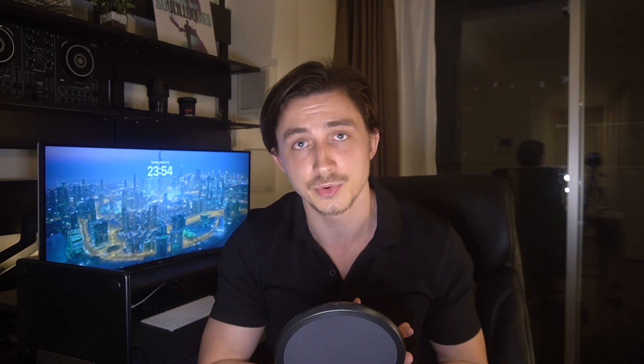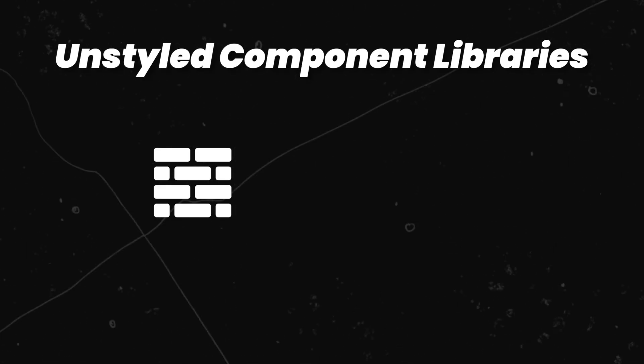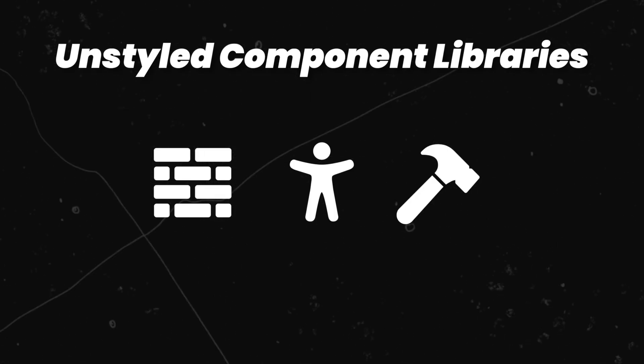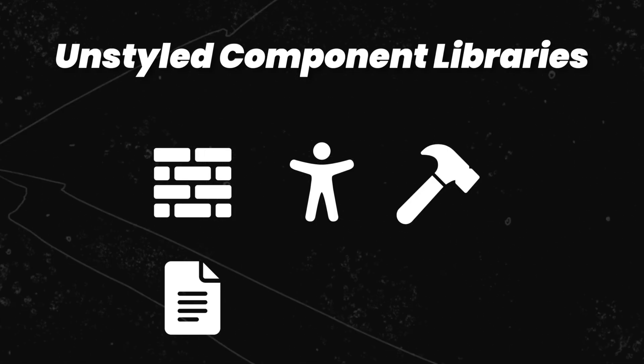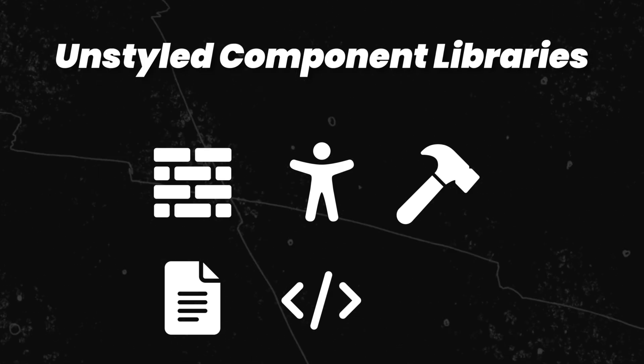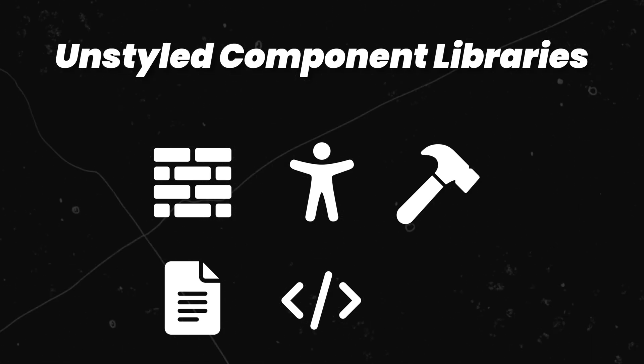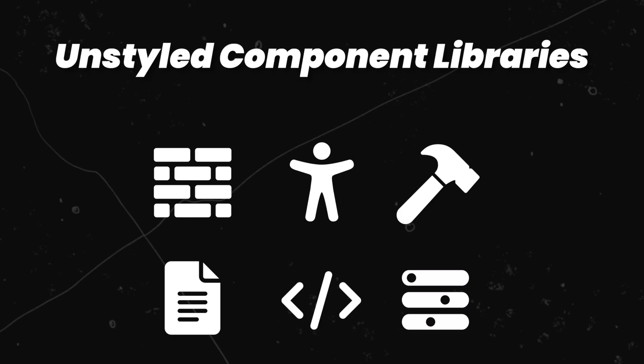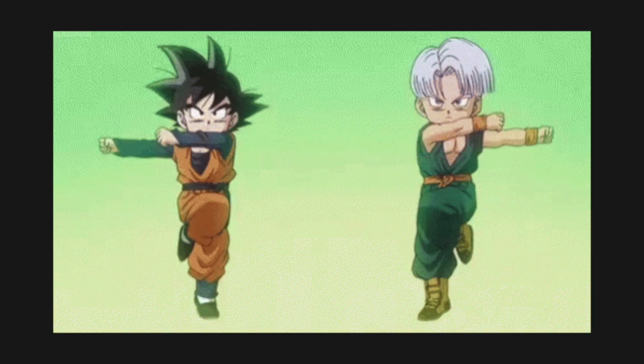Unstyled component libraries try to solve this issue by providing components that are robust, highly accessible, well tested, have documentation, and basically all the necessary logic to function — but without any kind of styling. They are therefore usually easy to modify in how they look and behave. Basically the best of both worlds. And based on how quickly they are becoming popular, it seems like that's what many developers want.